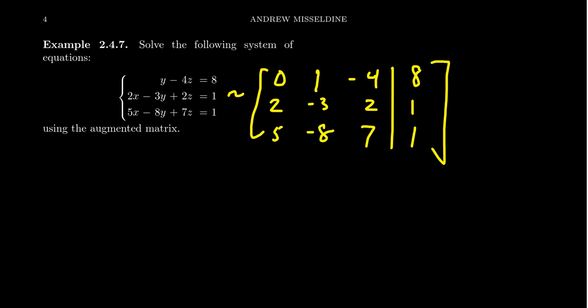So this is our augmented matrix, and the first column that's non-zero will be our pivot column. It gets a pivot position in the 1,1 spot. Now, there is a zero in that pivot position, so we've got to get something non-zero in there. We have a couple of options on how to do that.